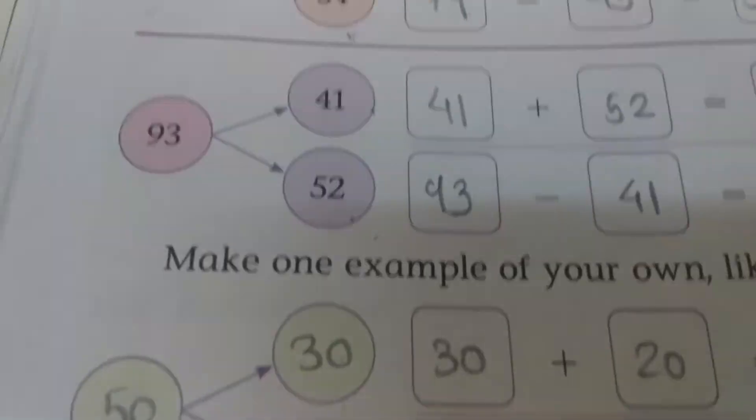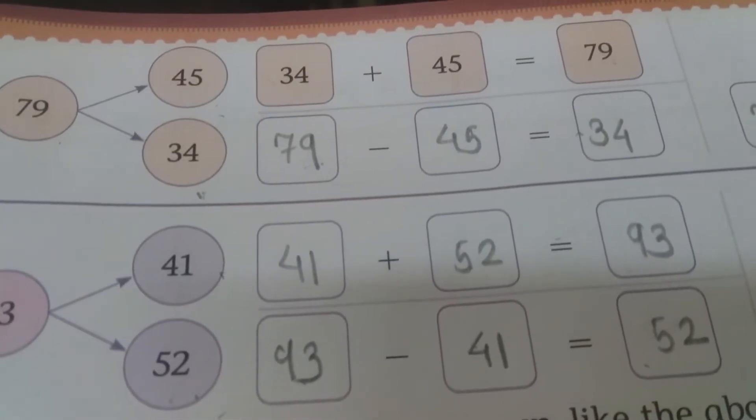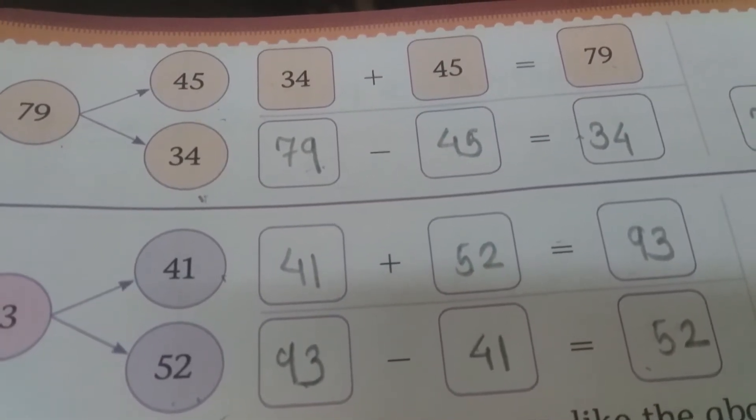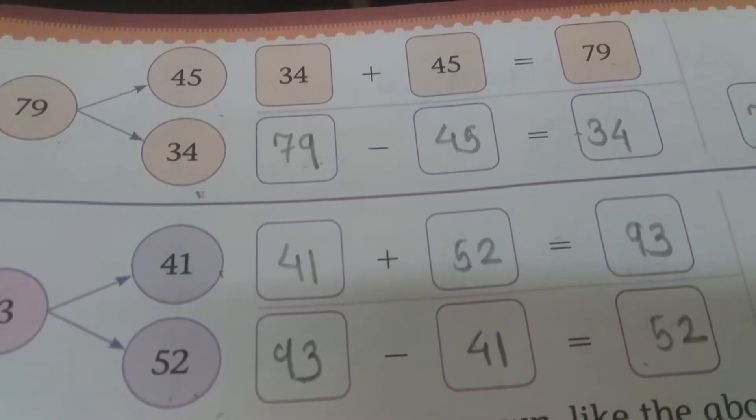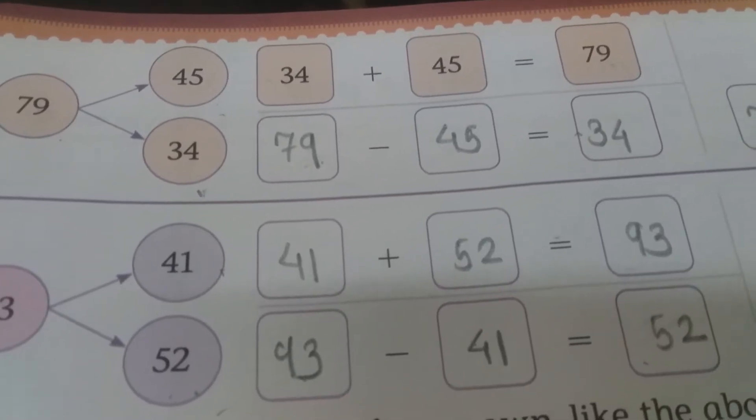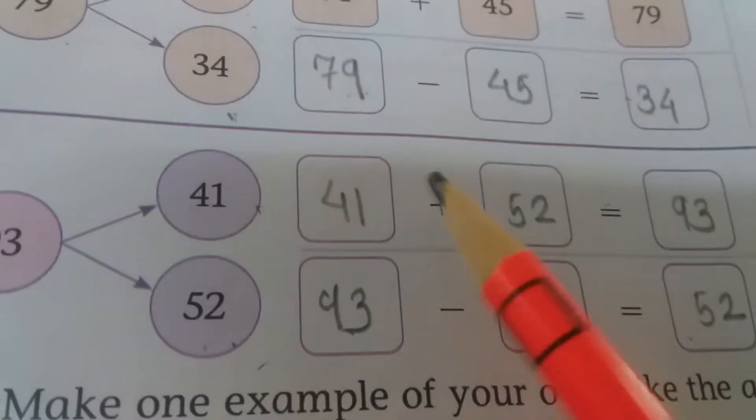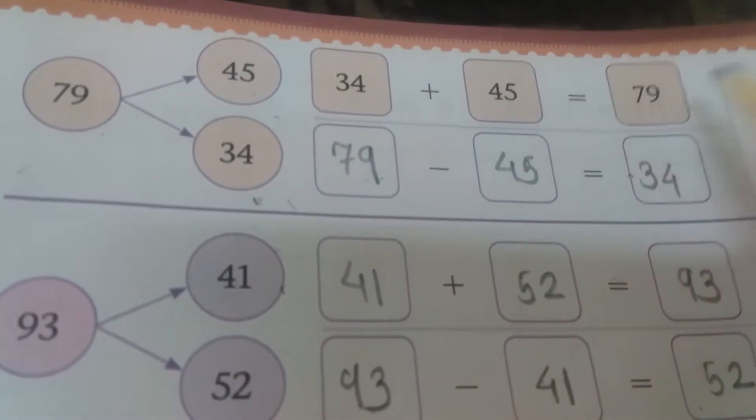Now see children, here examples 79. 79 from 79 and 45 and 34 number is given. You have to make one addition example and two subtraction examples from this. Now see children, 34 plus 45, 34 plus 45 means answer is 79.